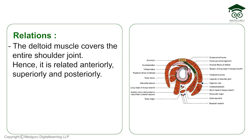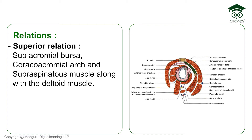Now for the relations of the shoulder joint — we will cover superior, inferior, anterior, posterior, and within the joint. The most important thing is that the deltoid muscle covers the whole shoulder joint. Superiorly, there are three structures: the subacromial bursa, the coracoacromial arch, and the supraspinatus muscle — and over all of these is the deltoid muscle.